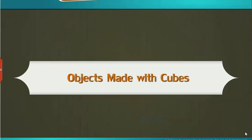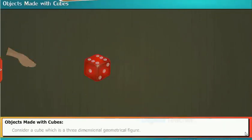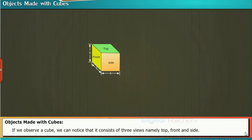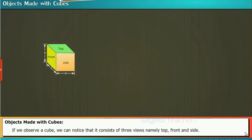In this section, we are going to learn about the objects made with cubes or boxes. Consider a cube which is a three-dimensional geometrical figure. If we observe a cube, we can notice that it consists of three views namely top, front, and side.